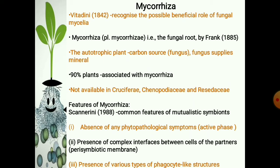The autotrophic host plant acts as the carbon source for the fungus, while the fungus supplies the mineral nutrients to the plants. About 90% of all land plants are associated with mycorrhizae. The mycorrhizae association is not available in Cruciferae, Chenopodiaceae, and Resedaceae.